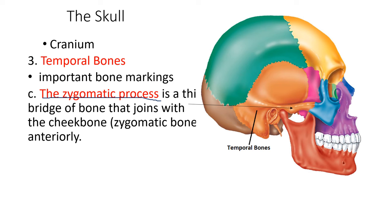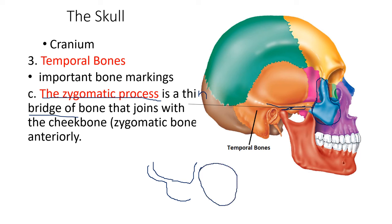Another marking is the zygomatic process. The zygomatic is the cheekbone. The zygomatic bone is joined to the temporal bone by a process called the zygomatic process. This zygomatic process is not part of the zygomatic bone but is part of the temporal bone — it is a protrusion from the temporal bone, described as a thin bridge of bone that joins the cheekbone or zygomatic bone.